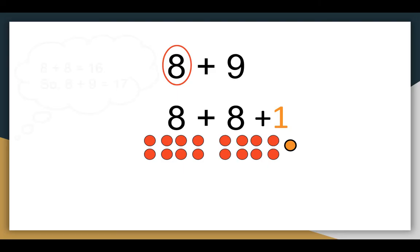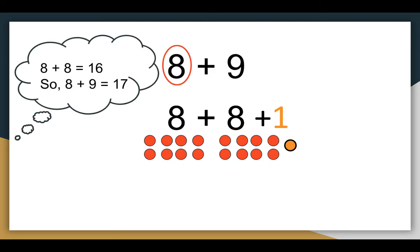So in my head, I'm thinking eight plus eight equals 16, so eight plus nine is 17. It's just one more.